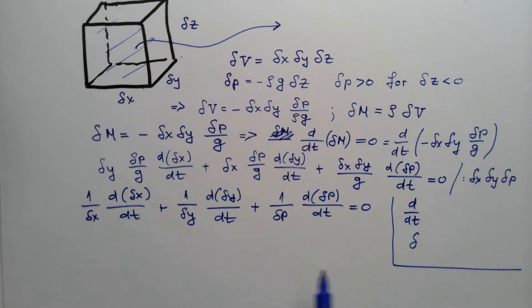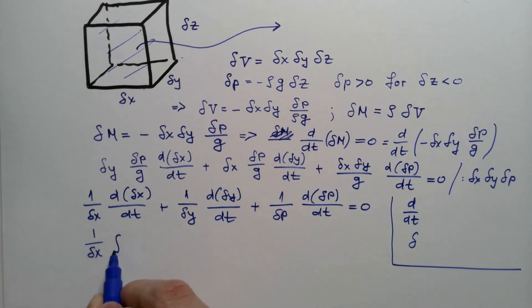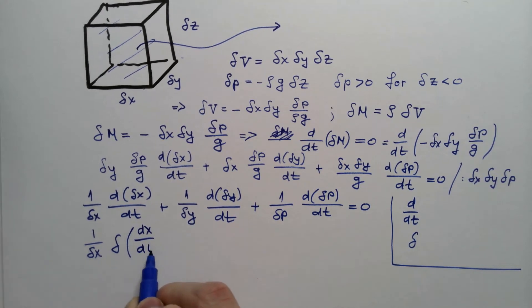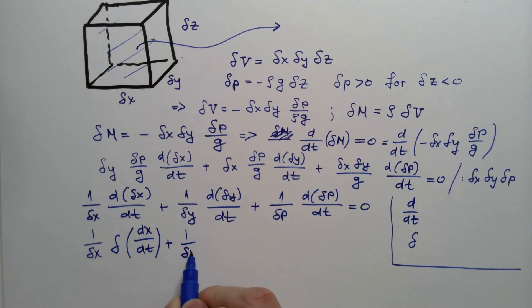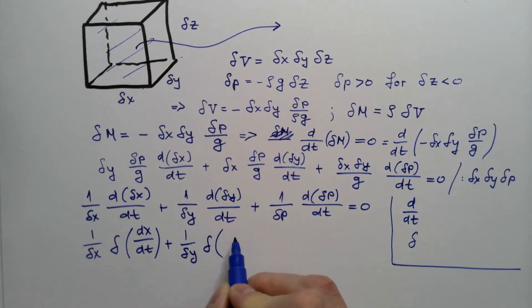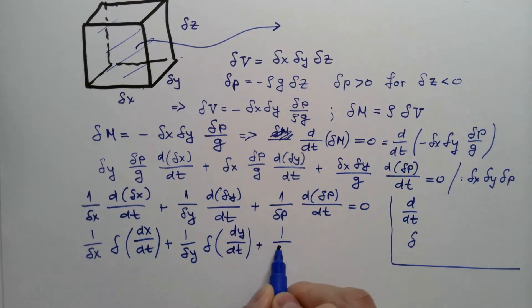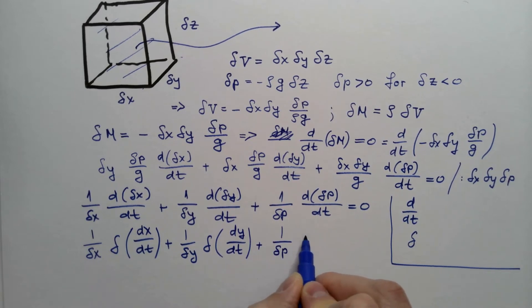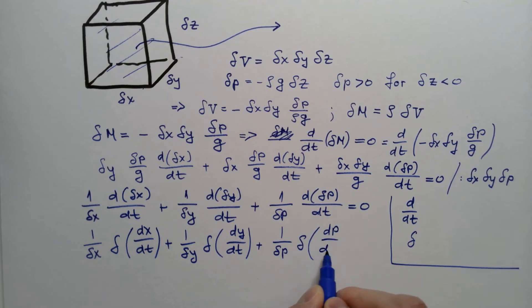And rewrite this equation as one over delta x delta of dx dt plus one over delta y delta of dy dt plus one over delta p delta of dp dt equals zero.